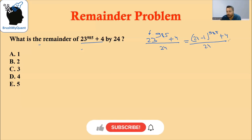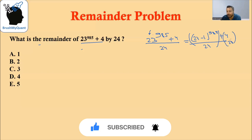We can divide these two numbers separately. We can divide this part and divide 4 by 24 separately, then add the remainders. Let's expand the first part using the binomial theorem.